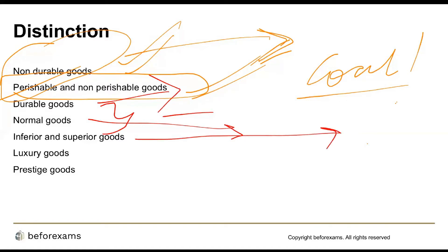Inferior goods are goods whose demand decreases as income increases, and they have a negative elasticity of demand. For example, a man whose salary has recently increased will spend less on cheap clothing. Superior goods, on the other hand, are goods whose demand increases as income increases, with a positive elasticity of demand curve.